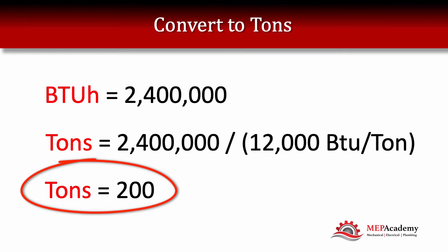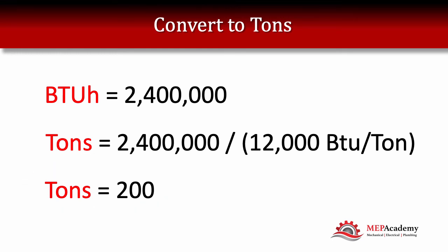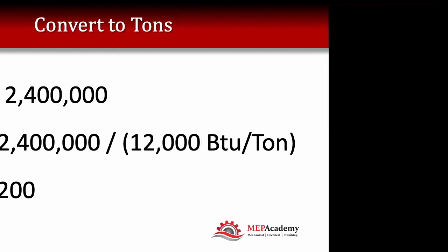It's a simple formula, and you can turn it around to determine GPM if you know the BTUs. This is a quick way to determine the tonnage of whatever waterside piece of equipment you're measuring, if you have the GPM and the Delta T.